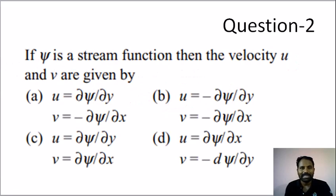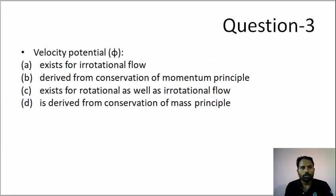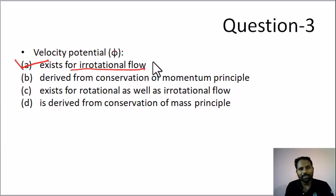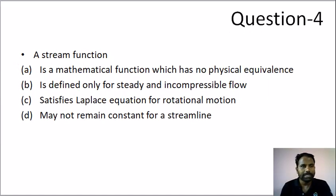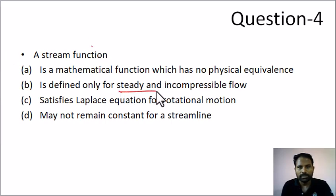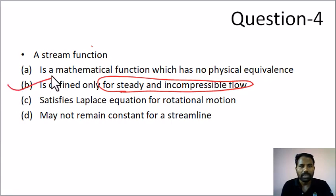Question number 2 — that's a previous exam question. Question number 3: velocity potential exists — that is irrotational flow. That is phi, Laplace satisfied, flow possible — steady incompressible flow. These are previous exam questions. Question number 4: stream function exists — flow possible, mostly steady incompressible flow. Option B is the answer. If we can satisfy the Laplace equation, that is irrotational.